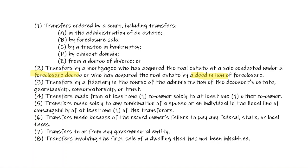We already mentioned the decedent's estate — if they are the executor or the guardian of a person. Transfers made from one owner to another co-owner, like in a divorce decree. If a husband and wife split the house and one quit claims his interest to the other, there is no seller's disclosure. The same thing if a spouse transfers it to what's called consanguinity, which is the descent, like their children — a lineal line of consanguinity.